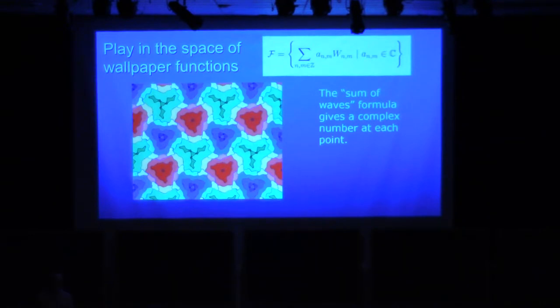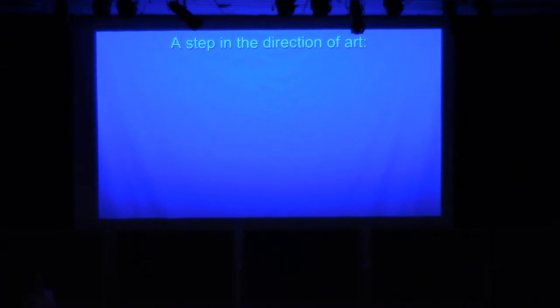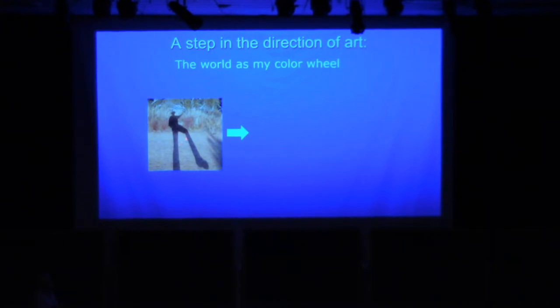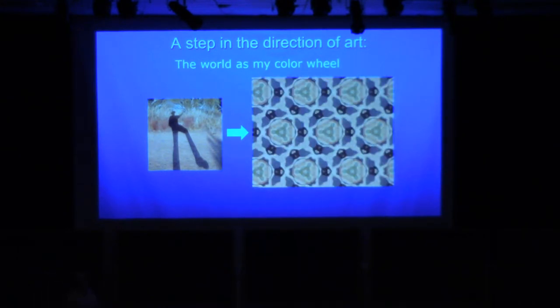Just for emphasis, this is what the domain coloring algorithm is: the sum of wave formula gives you a complex number at each point, then that complex number gives you a color. You put that color in the domain of this function. I realized long ago that I could do this, but I only accomplished it seven, eight years ago. The world should be my color wheel. Why use these artificial artists' color wheels? Why not take that as my coloring of the complex plane? There's zero, there's one, there's i, there's 2i. Why not combine it with waves, make a pattern like this?